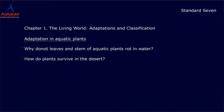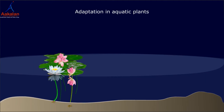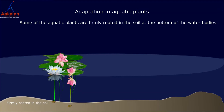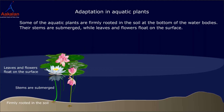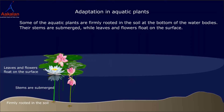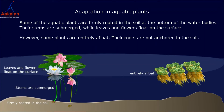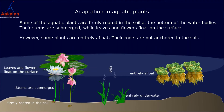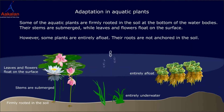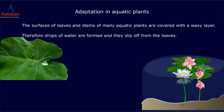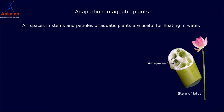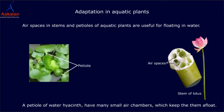Now we will learn about adaptation in various kinds of plants. Adaptation in aquatic plants: Some aquatic plants are firmly rooted in the soil at the bottom of the water body. Their stems are submerged while leaves and flowers float on the surface. However, some plants are entirely afloat — their roots are not anchored in the soil. The surfaces of leaves and stems of many aquatic plants are covered with waxy layers, so drops of water form and slip off from the leaves. Air spaces in stems and petioles of aquatic plants are useful for floating in water.